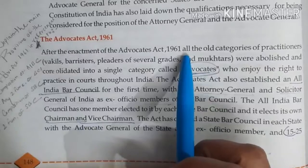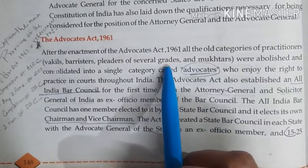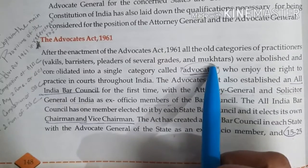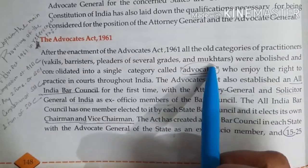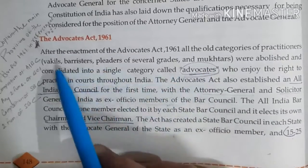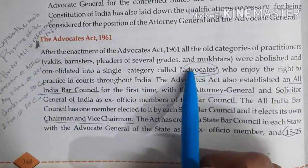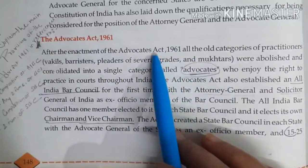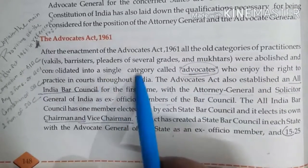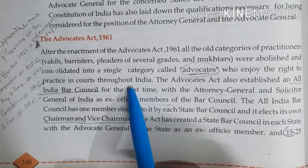After the enactment of the Advocates Act 1961, all the old categories of lawyers — like Vakil, Barrister, Pleader, and Mukhtar — were abolished. Before the Advocates Act 1961, we used different terminologies to denote lawyers, but these categories were deleted and a single category was created: Advocate.